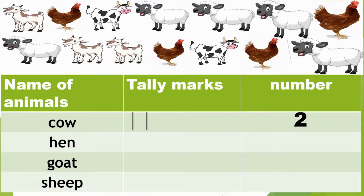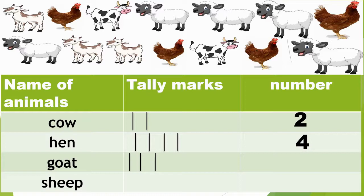Now we will count the number of hens: 1, 2, 3, 4. There are 4 hens. I will draw 4 tally marks, and the number is 4. Now we will count the number of goats: 1, 2, 3. There are 3 goats. I will draw 3 tally marks, and the number is 3.